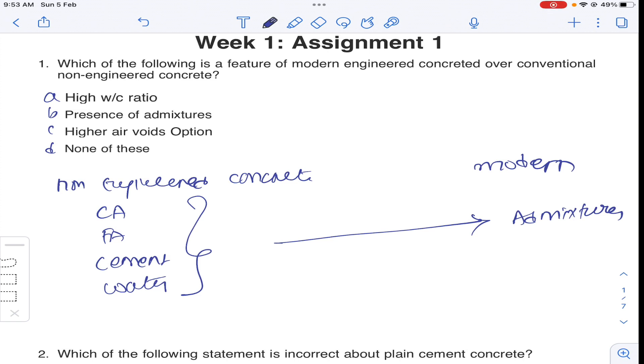There are some materials developed to maintain water cement ratio, to maintain workability of concrete, to maintain the strength, to maintain easy workability. So for all these reasons, the extra material that we are using nowadays is admixtures. So it is answer B for question number 1.